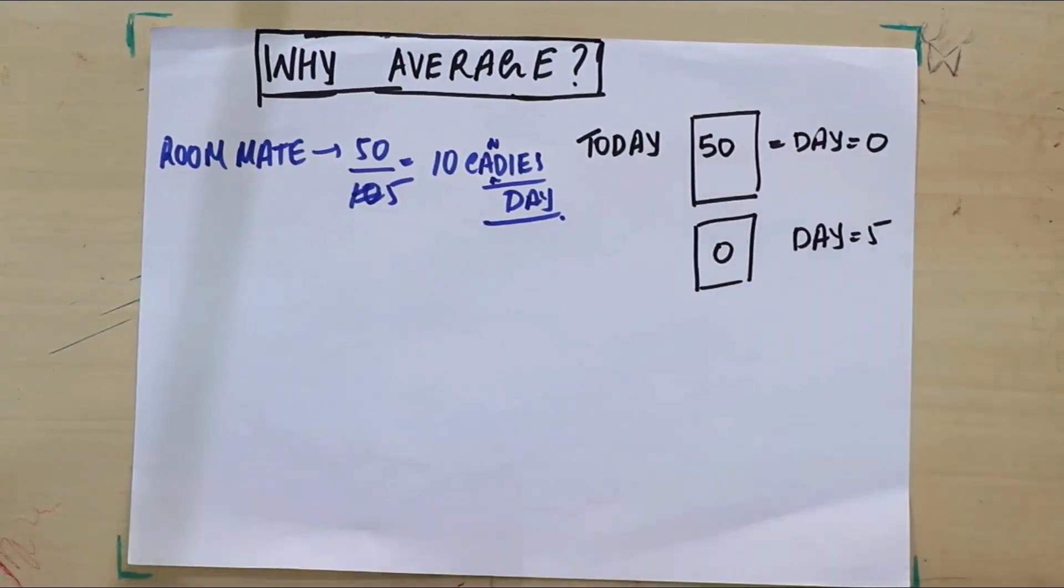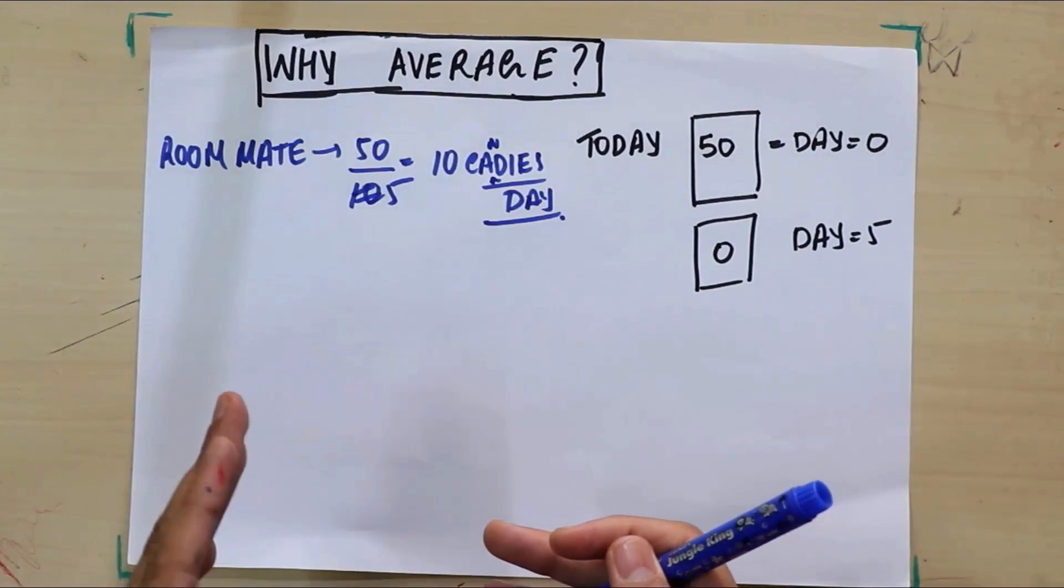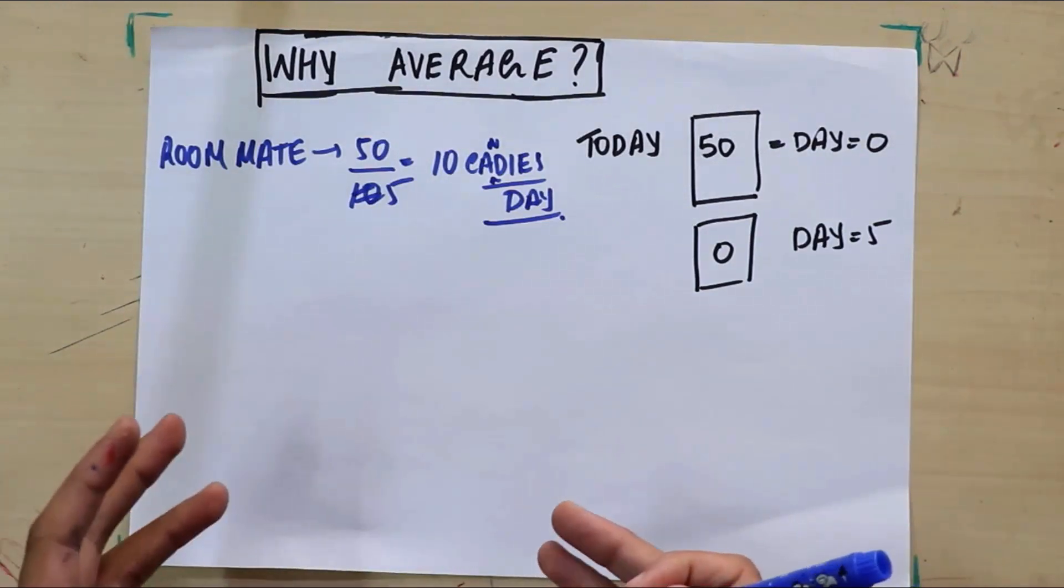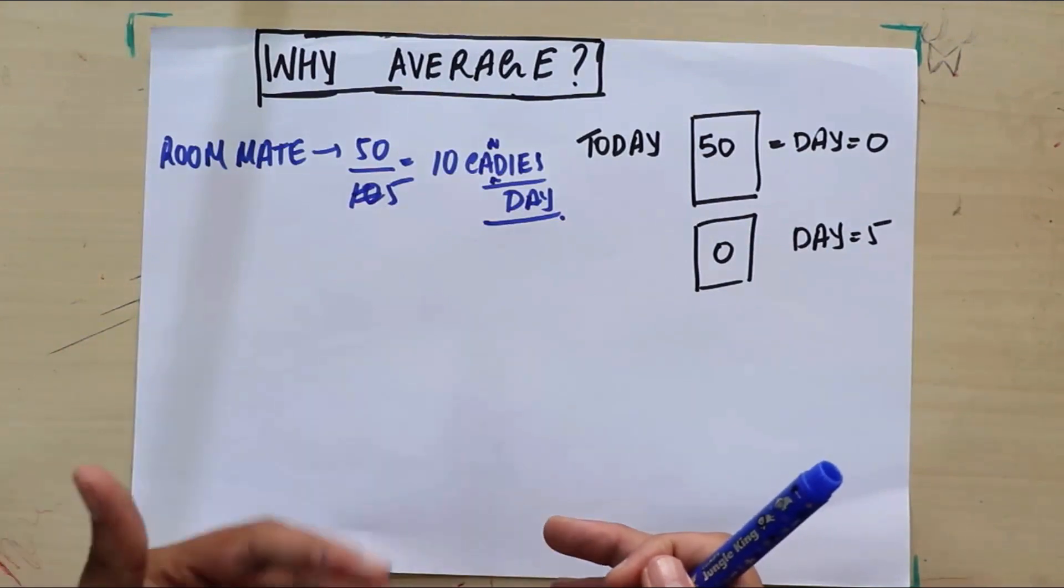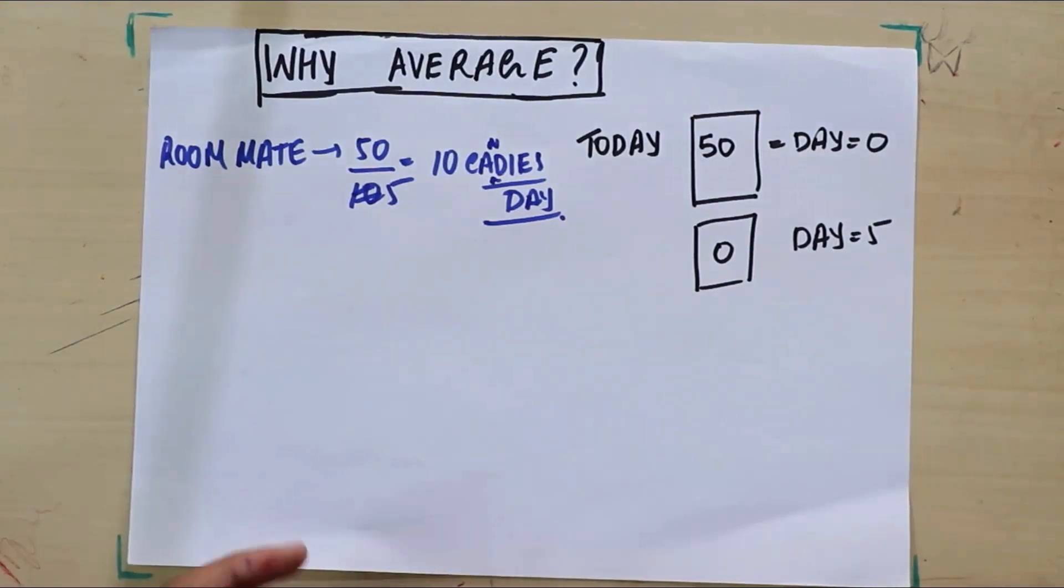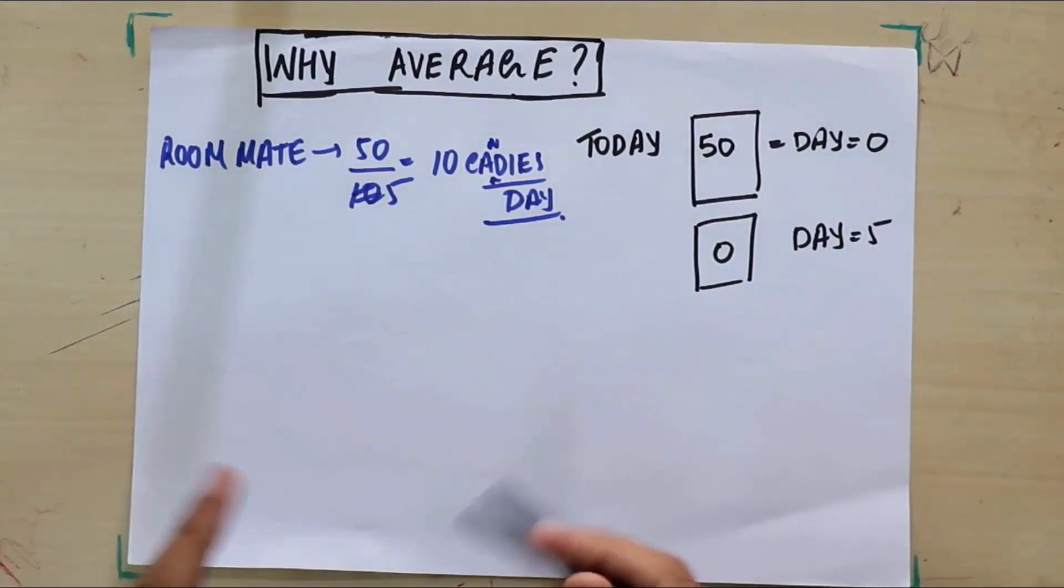So what do I do? Well, I get extremely angry and I go to my roommate and I start blasting at him. I say, "Don't you have any sense, man? Eating 10 candies per day is not good for your health, and by the way, they're my candies." You know what the roommate would say? "I didn't do that. I never ate 10 candies per day."